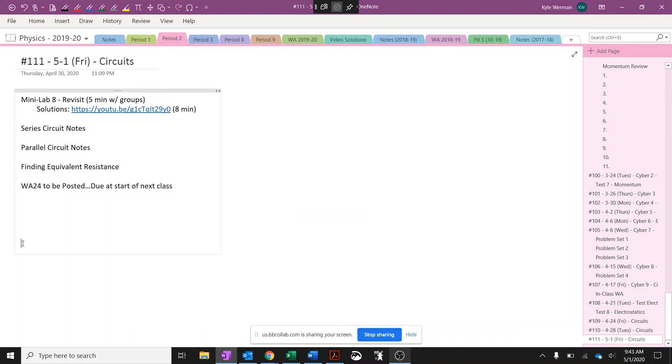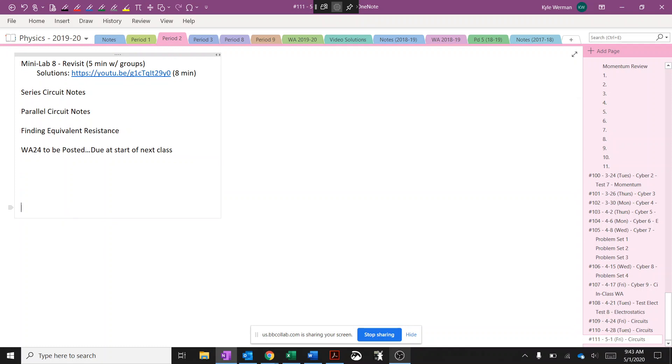All right, so in the media lab we looked at a couple types of circuits and they were labeled, and we talked briefly about what they represented. But I want to define them and go through some of the rules that are going to dictate how these circuits operate. The first kind of circuit is what we call a series circuit.